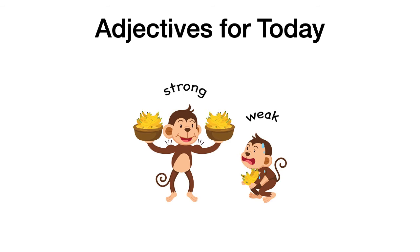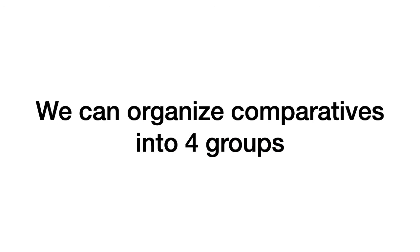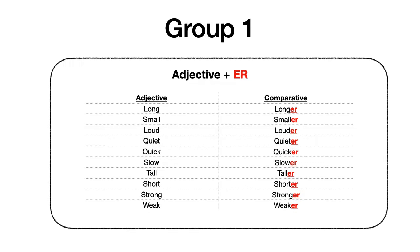Strong, weak. Fuerte, débil. So those were the adjectives. Te sugiero que los puedas ir revisando nuevamente. Puedes volver atrás en el video y repetirlos. We can organize comparatives into four groups — vamos a organizar los comparativos en cuatro grupos, pero hoy solamente vamos a ver dos grupos.